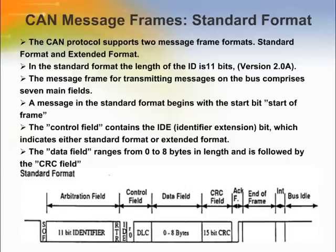The MCP2515 supports standard data frames, extended data frames, and remote frames as defined in the CAN 2.0b specification. A message in the standard format begins with the start of frame bit, followed by the arbitration field which contains the identifier and the RTR or remote transmission request bit, which indicates whether it is a data frame or a request frame without any data bytes. The control field contains the IDE or identifier extension bit which indicates either standard or extended format. The data field ranges from 0 to 8 bytes in length and is followed by the CRC field, which is used as a frame security check for detecting bit errors.